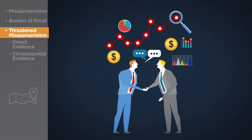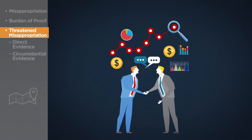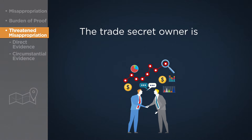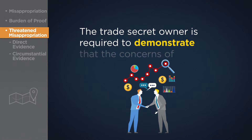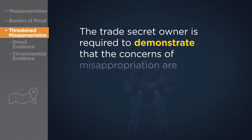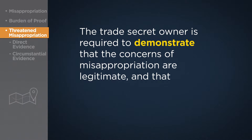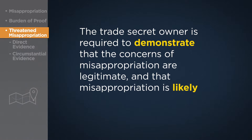Courts will not prohibit the wrongful use or disclosure of trade secrets based upon the mere suspicions of the trade secret owner that some misappropriation may occur. Rather, the trade secret owner is required to demonstrate that the concerns of misappropriation are legitimate and that misappropriation is likely to occur.